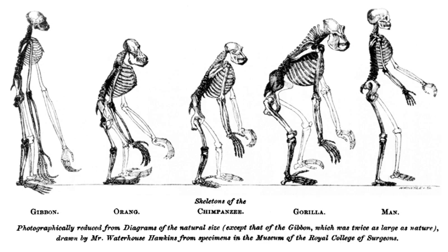Bilateria, animals with a front and a back, appeared by 555 Ma. The earliest complex land plants date back to around 850 Ma, from carbon isotopes in Precambrian rocks, while algae-like multicellular land plants are dated back to about 1 billion years ago, although evidence suggests microorganisms formed the earliest terrestrial ecosystems at least 2.7 Ga. Microorganisms are thought to have paved the way for the inception of land plants in the Ordovician, and land plants were so successful that they are thought to have contributed to the late Devonian extinction event.